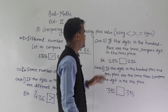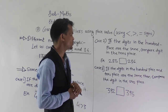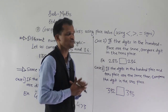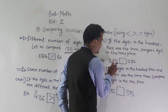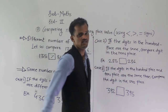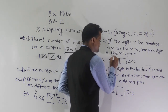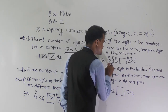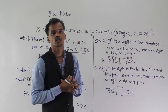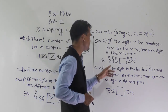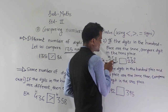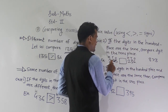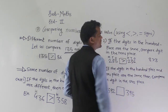The next case: if the digits in the 100s place are the same, then you have to compare the 10s place digit. For example, 285 and 236 — the 100s place digit is the same, both are 2. So we compare the 10s place digit: in 285 the 10s digit is 8, in 236 the 10s digit is 3. Since 8 is greater than 3, 285 is greater than 236.